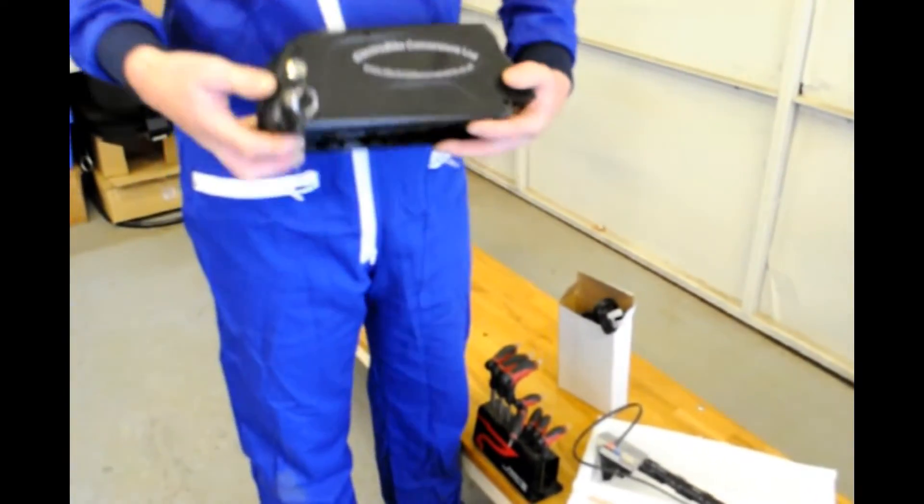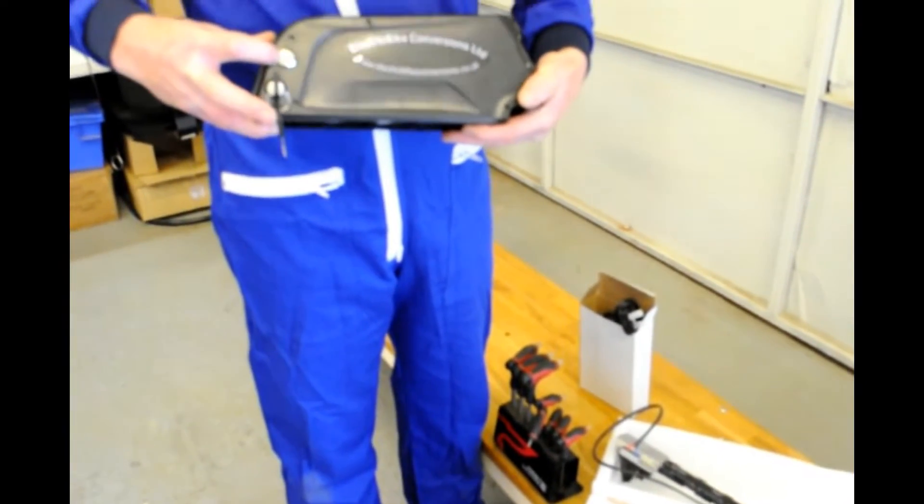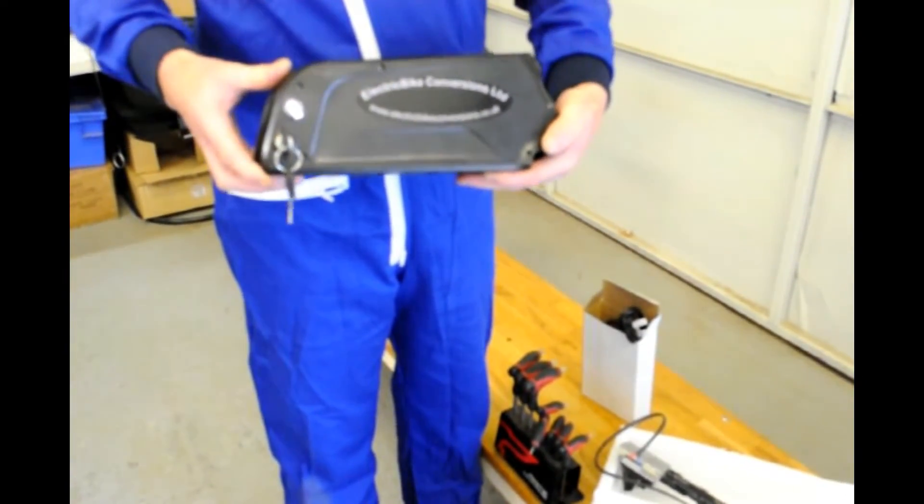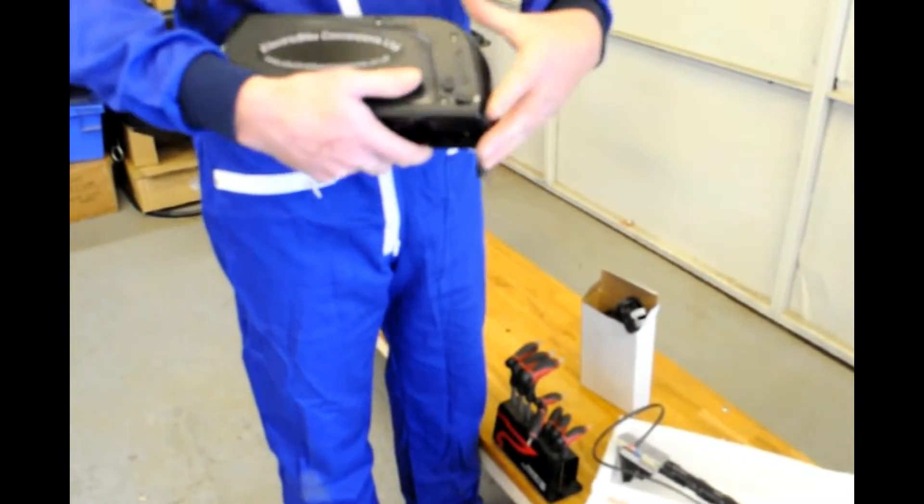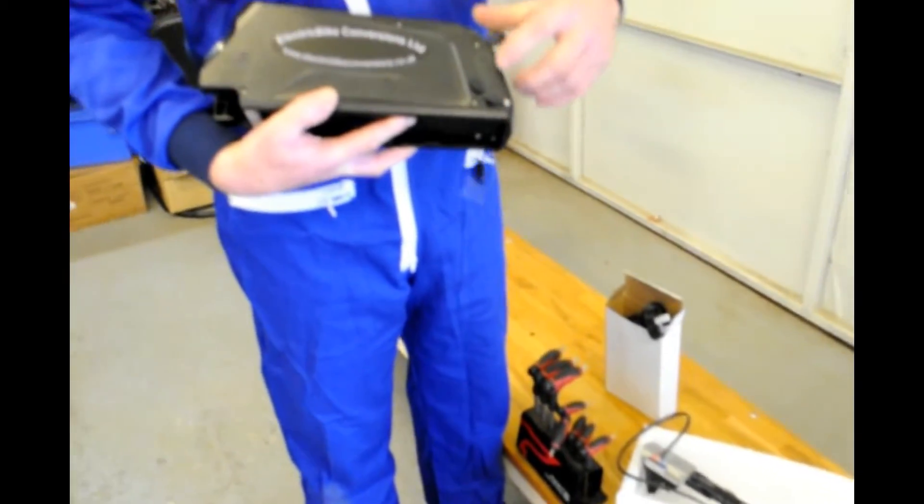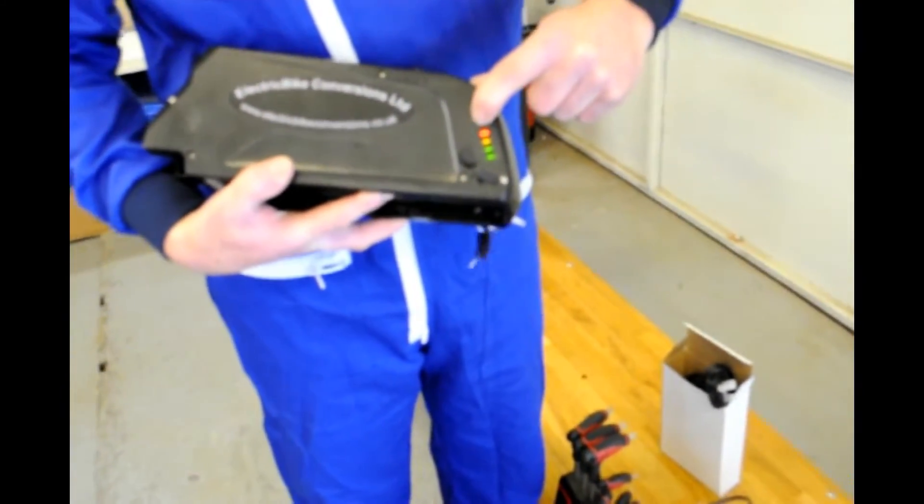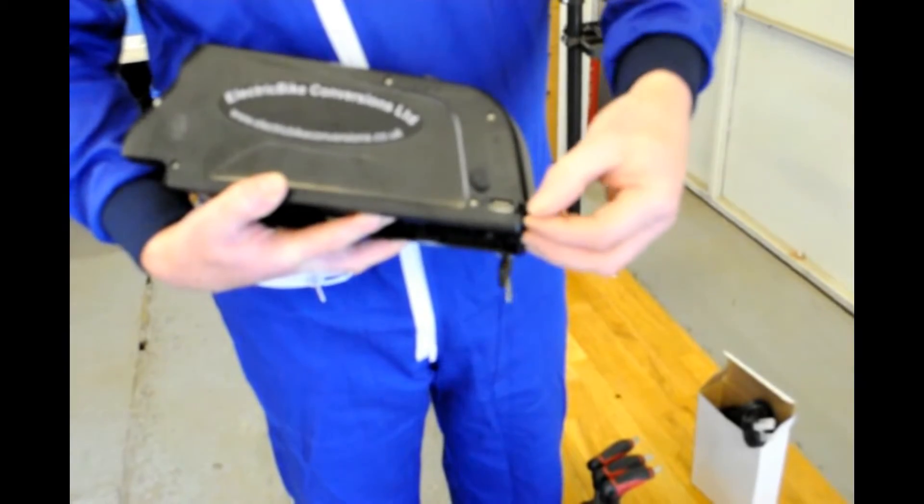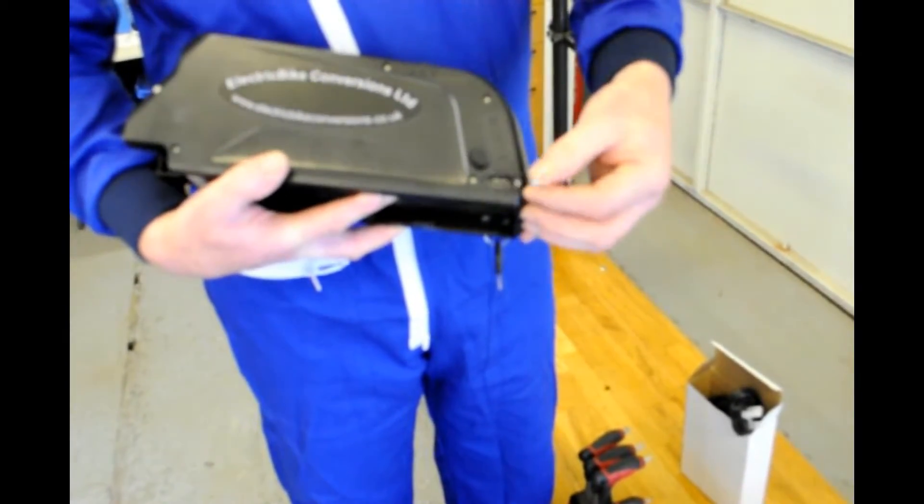On the battery you have a switch to turn the battery on and off which lights up blue. And on the other side of the battery you have a battery indicator. You have also got a USB port as well for charging your telephone if required.